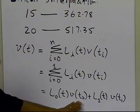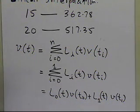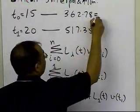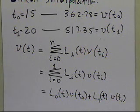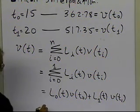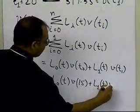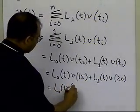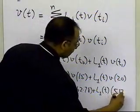We have two velocity values at t0 and t1, weighted by l0(t) and l1(t) respectively. It won't matter if you switch them. So the expression becomes: l0(t)·362.78 plus l1(t)·517.35. Now we need to calculate what these individual Lagrangian weight functions are.